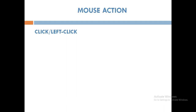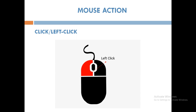First, let us see what is a click or a left click. Pressing the left mouse button once is called click or left click. A left click selects an item on the monitor. So when you want to select an item on the monitor, you have to press the left mouse button once.